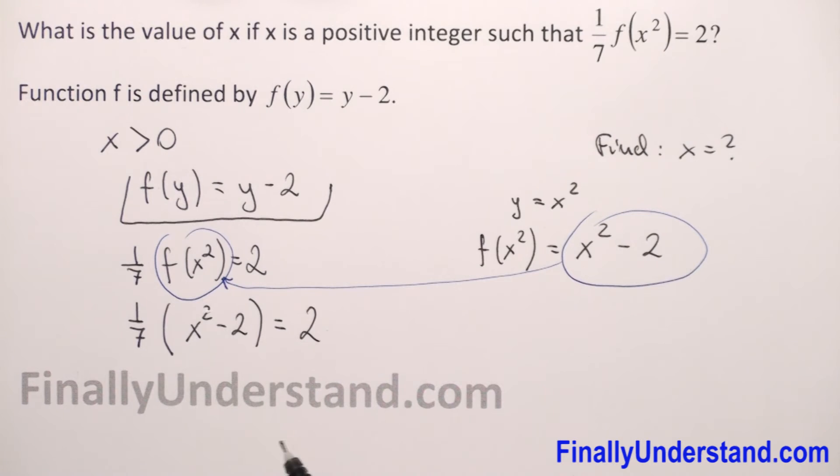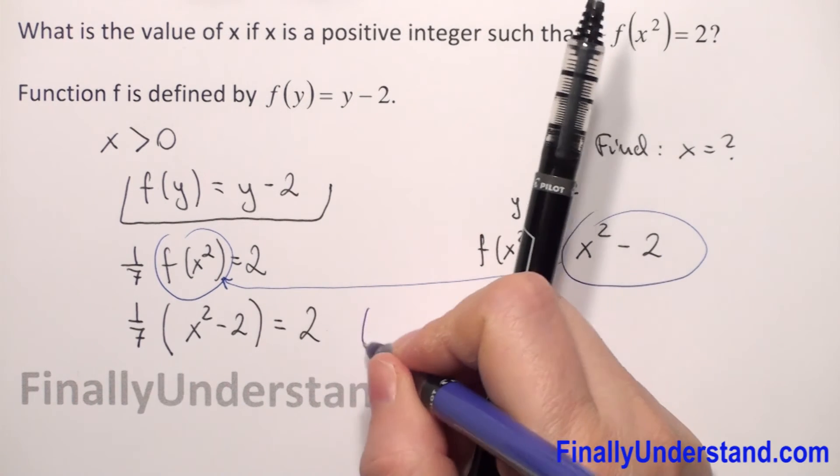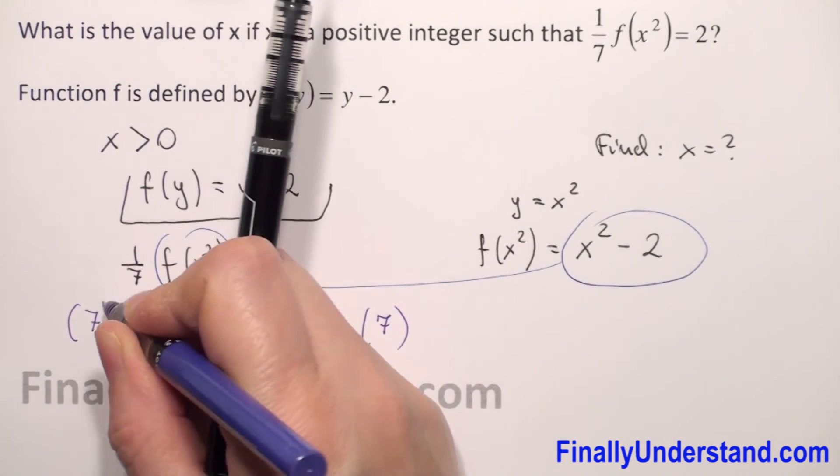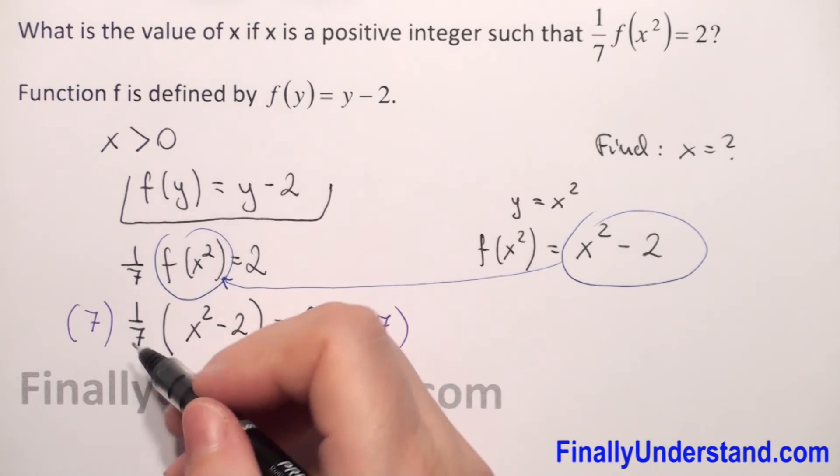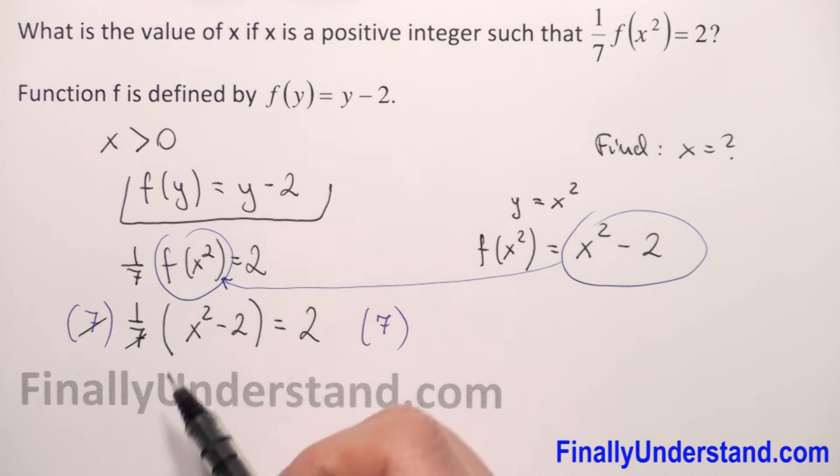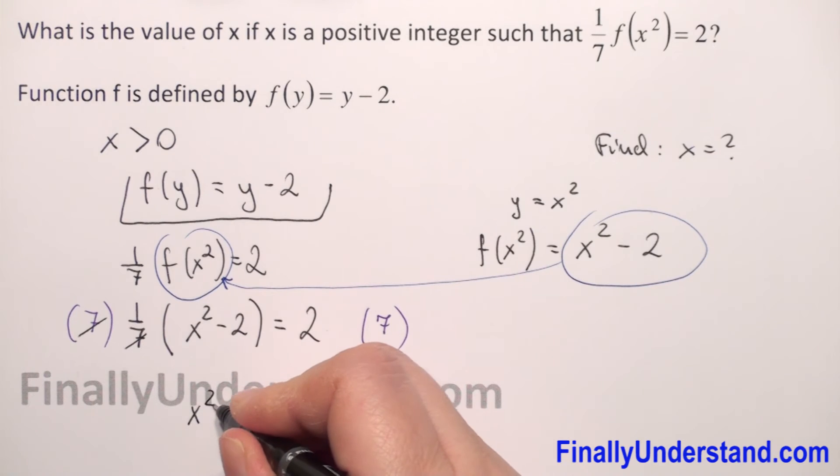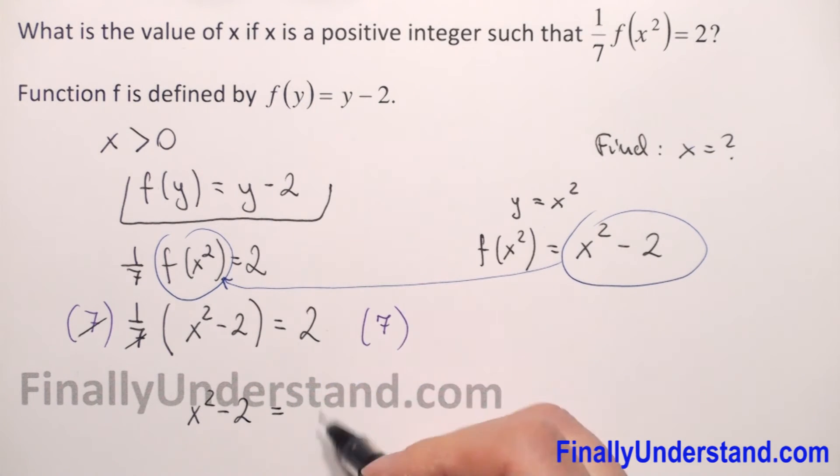Now we have equation with 1 unknown. So first we will multiply both sides by 7 to reduce this fraction. 7 and 7 we will reduce and we have 1 times x squared minus 2. So this is x squared minus 2 and this is equal to 2 times 7 is 14.